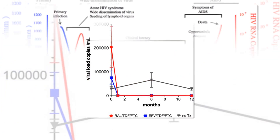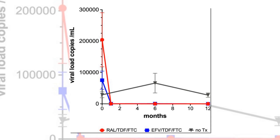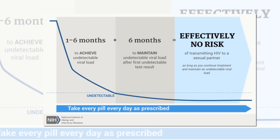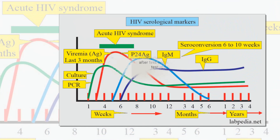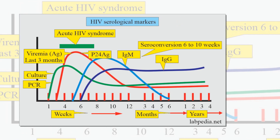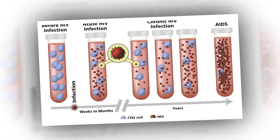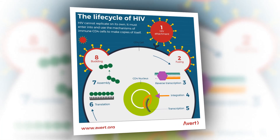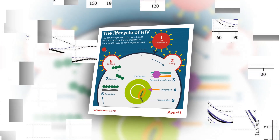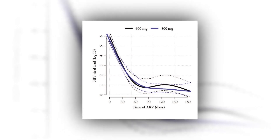Despite its importance, scientists do not yet understand how HIV's recombination rate varies throughout an infection or between different people. Understanding the factors that impact recombination rate in a well-studied system such as HIV can help uncover some of the effects that recombination has on evolution more broadly. One important yet understudied step in HIV recombination is co-infection, in which two different virus particles infect the same cell. Despite long-standing interest in HIV recombination, we do not yet understand whether variation in the rate of co-infection could lead to variation in recombination rate.